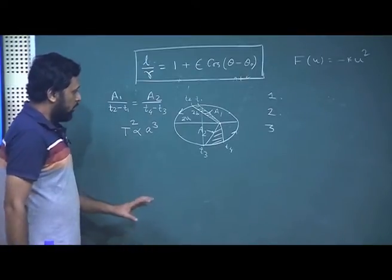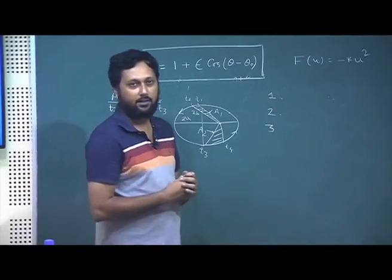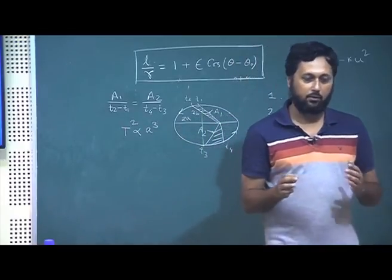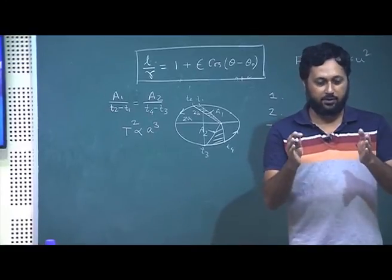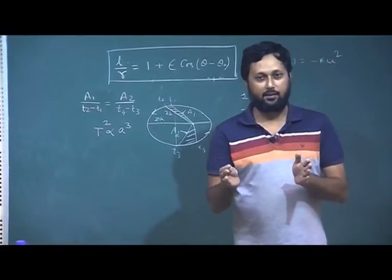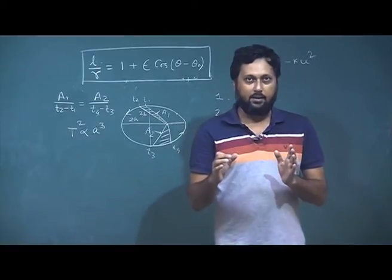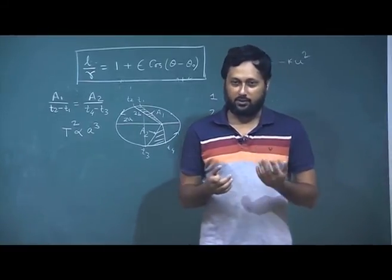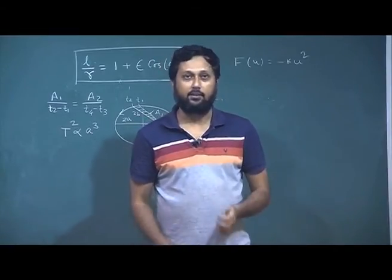Now, please remember that these three laws were purely observational at that time. He observed things, he relied not only on his observation, but the observation his predecessors had made, his contemporary other scientists like Tycho Brahe had made. He analyzed all this data and he came up with three laws, which later on was proved by Sir Isaac Newton.